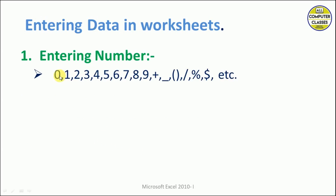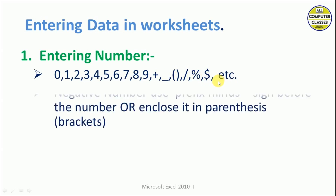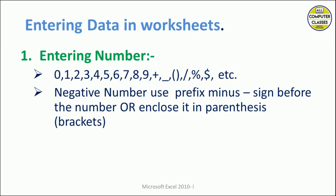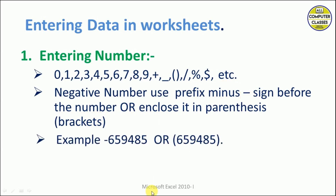When we talk about entering numbers, it means the numbers from 0 to 9 and some symbols. All these mathematical symbols are included when we talk about entering numbers. Whenever we want to enter a negative number, we must prefix that number with a minus sign before the number, or enclose the number in brackets. So if you are putting a minus sign or keeping that number in brackets, it means the number is a negative number.